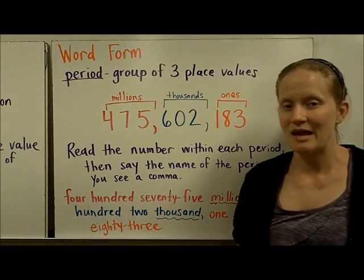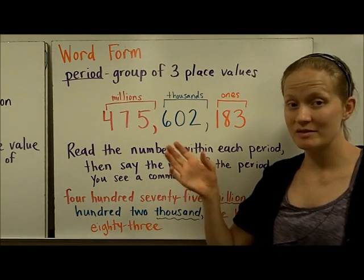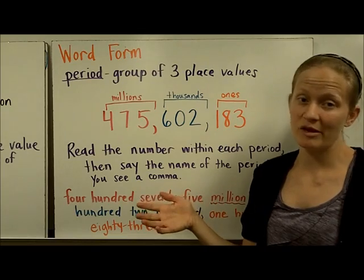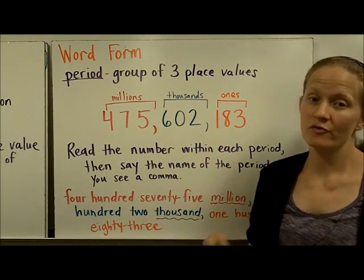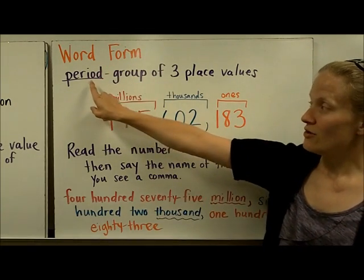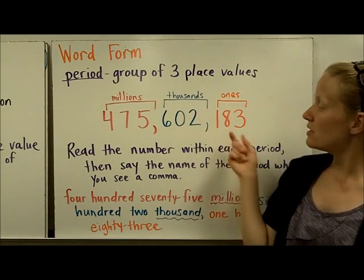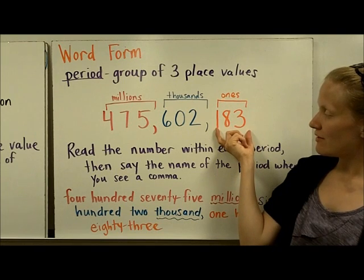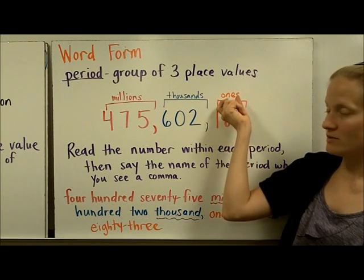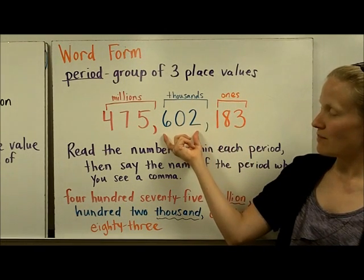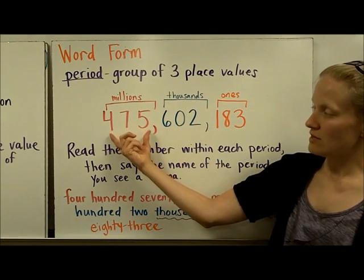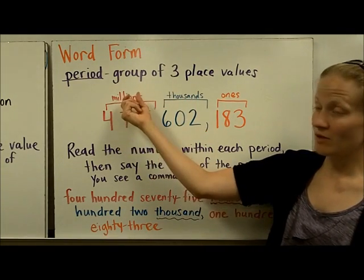You are often going to have to take a number that's in standard form—that's just written in regular numbers—and turn it into word form. So in order to do that, you need to know that a period is a group of three place values. So these three place values together make up the ones period, these three make up the thousands period, and these three place values together make the millions period.